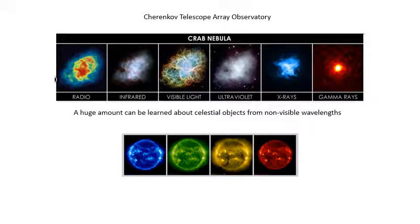The pictures at the bottom are from a satellite called SOHO, which is the solar helioscopic observatory, which is looking at the sun. I suggest you look at the website because it's fantastic. So an awful lot can be learned about things in the sky by using non-visible wavelengths.